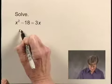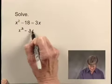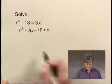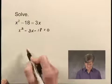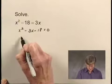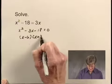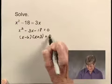When I do that, I have x squared minus 3x minus 18 equals zero. And now I'm going to factor the expression on the left hand side. When I do that, I get x minus 6 times x plus 3, and that's equal to 0.